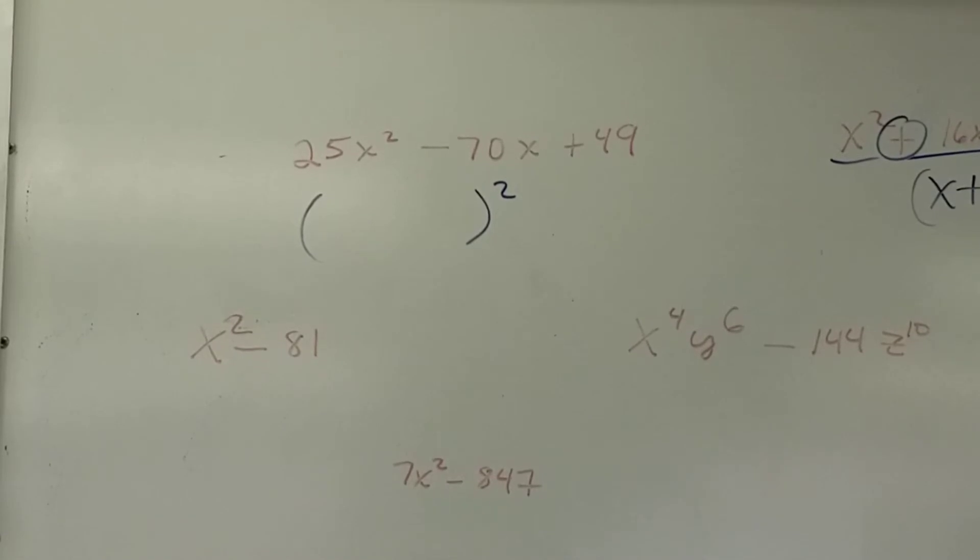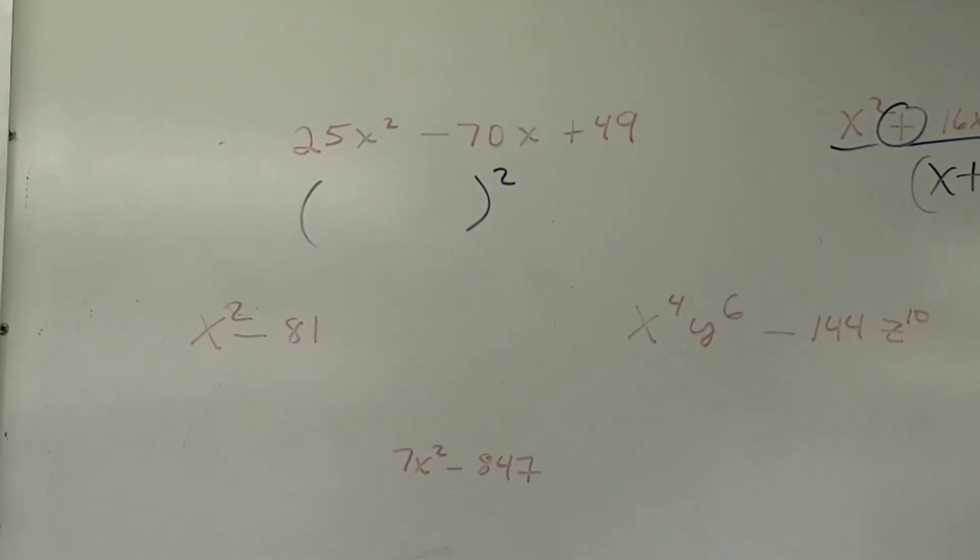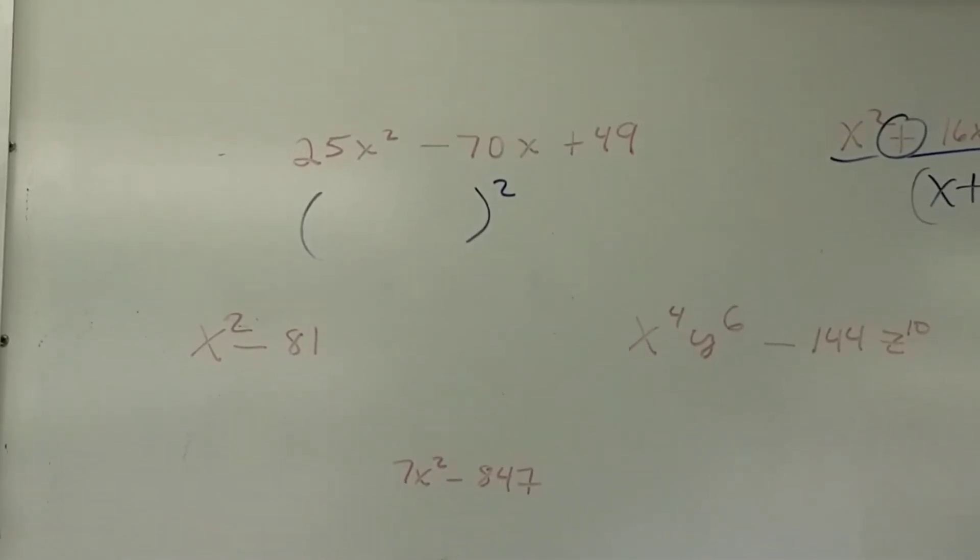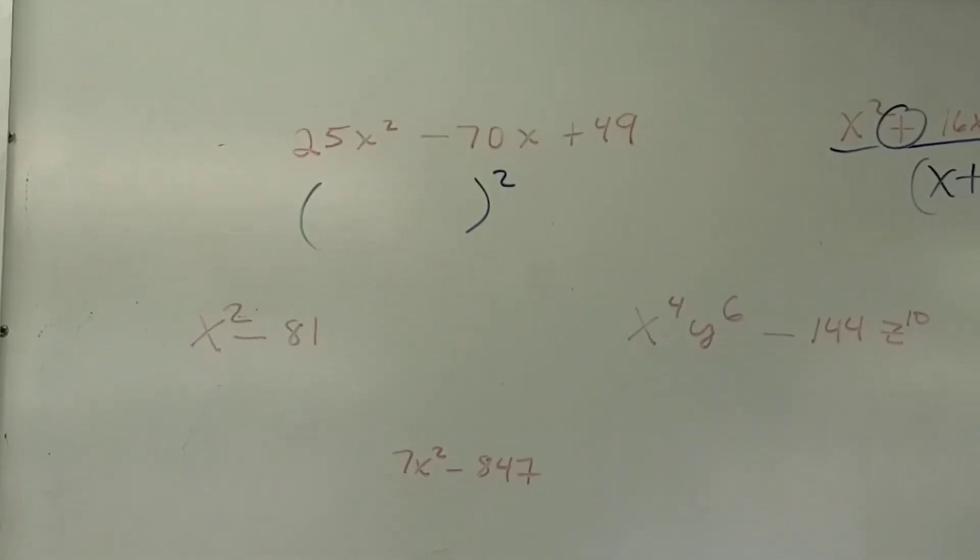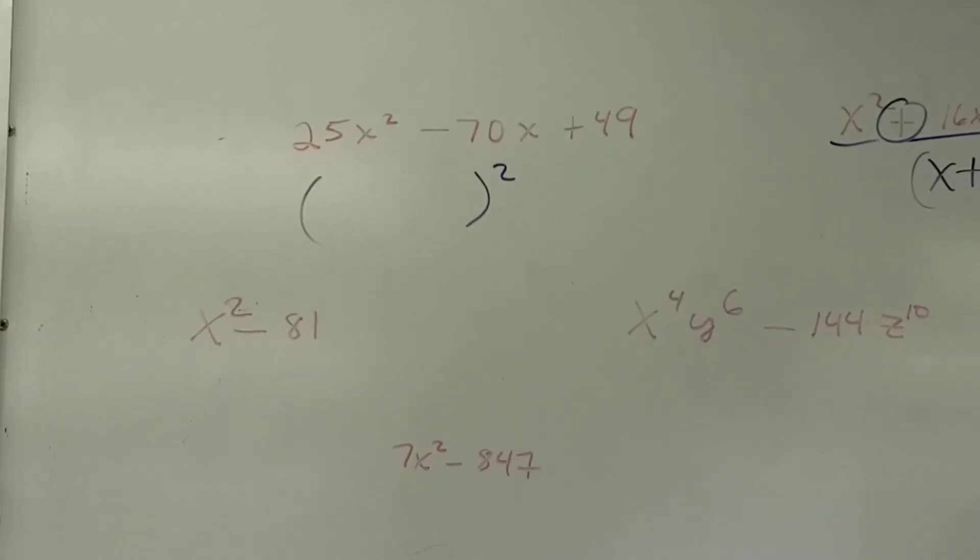What's the first term? 25x squared. Is that a perfect square? My brain should say, ah, perfect square. All right. How about 49? Perfect square. So therefore, if I take the square roots of those and multiply them and double them, it might be the middle term. Is it?